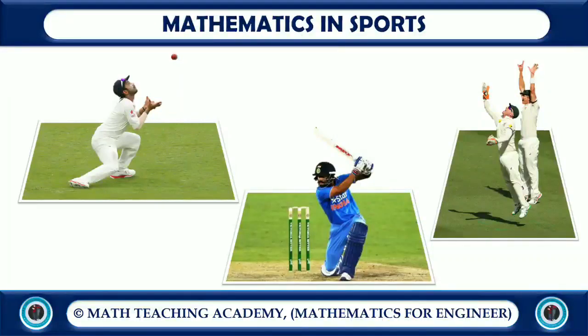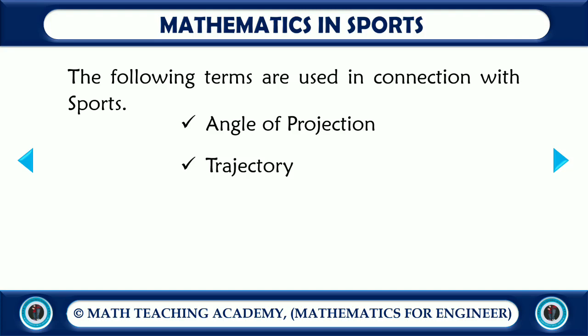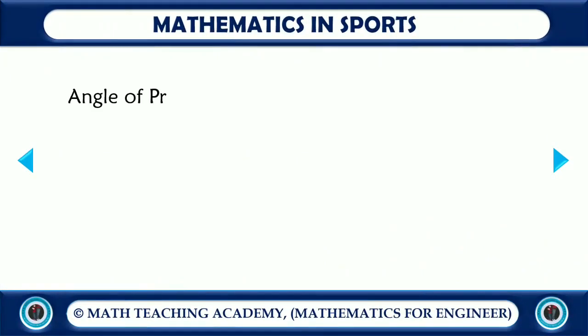In this video, we are going to look at applications of mathematics in sports. The following terms are used in connection with sports: angle of projection, which helps us to find the length of a six and take LBW decisions; trajectory, which helps us find the path of the ball after the batsman hits it; range, which helps us find the length of the six; and time of flight, which helps us find the speed of a ball.